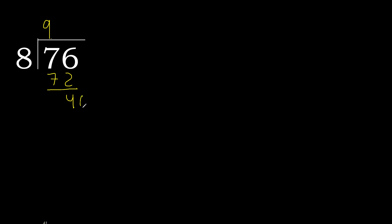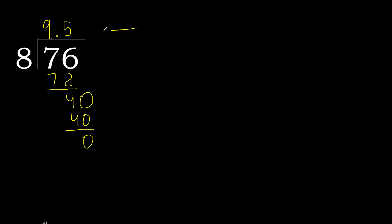Next. There is no number, therefore complete — always complete with 0 here. Point. 0 point. 40. 8 multiplied by 5 is 40 — ok, is not greater. 40 minus 40 is 0. Therefore finish: 76 divided by 8 is 9.5.